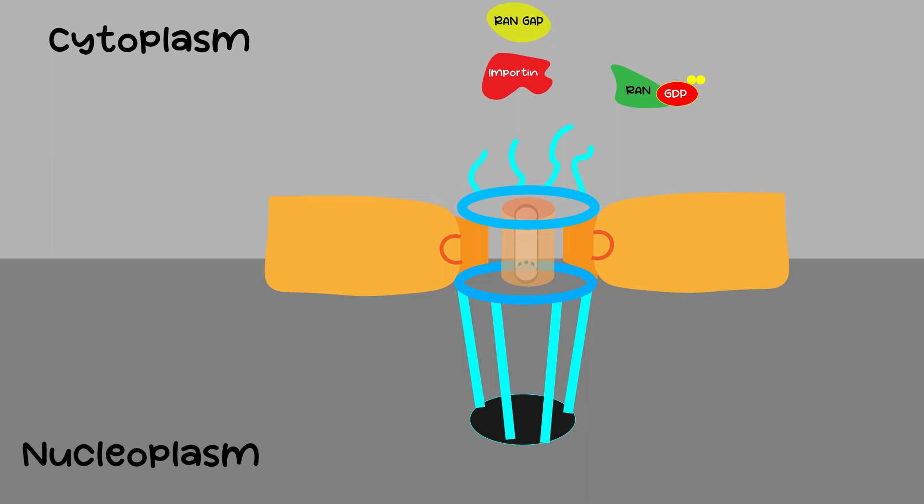To import RAN-GDP inside the nucleus, help is required by a protein called NTF2. It binds to RAN-GDP, then importin imports it inside through the nuclear pores and releases it.